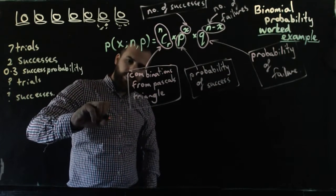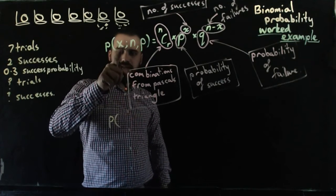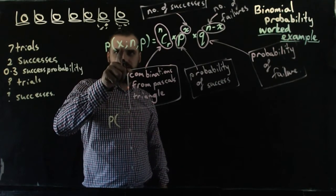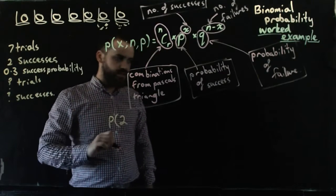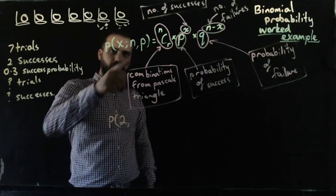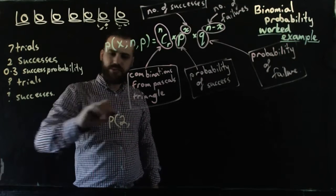The probability of X—they're the number of successes—so the number of successes are two. The probability of two successes from n trials, from seven trials.